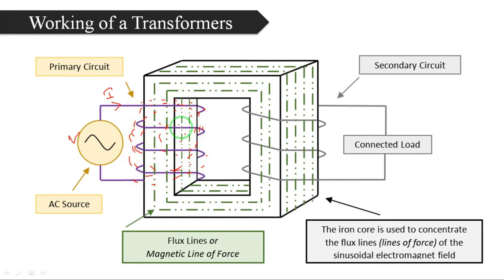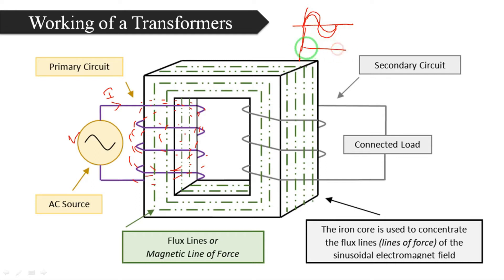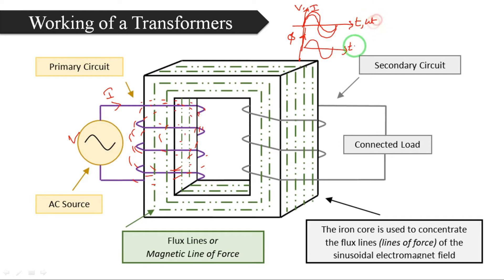This alternating flux — if there is an alternating voltage waveform, then the current is also alternating and follows the same waveform. Similarly, alternating flux follows the same waveform. Flux φ, voltage V, and current i are all plotted with respect to time t or ωt. Now, coming to Faraday's law of electromagnetic induction.